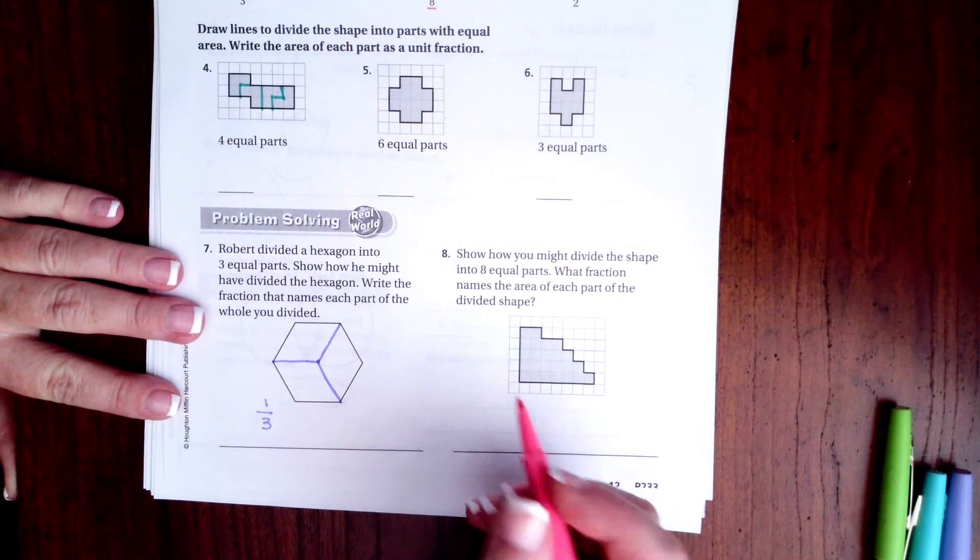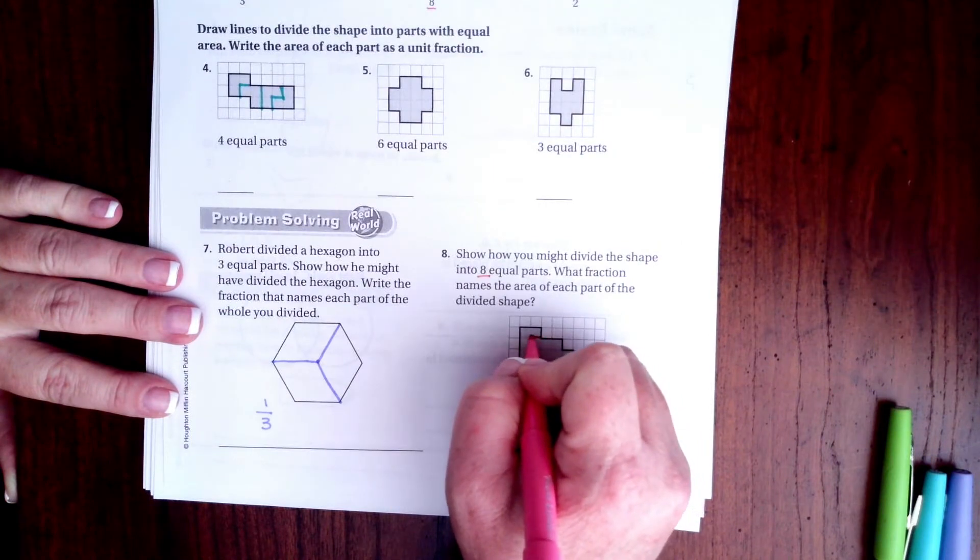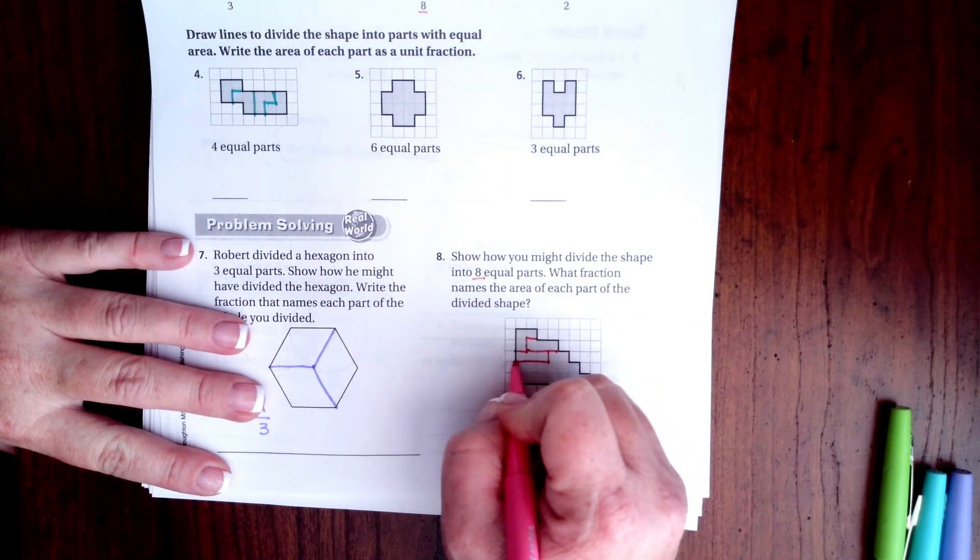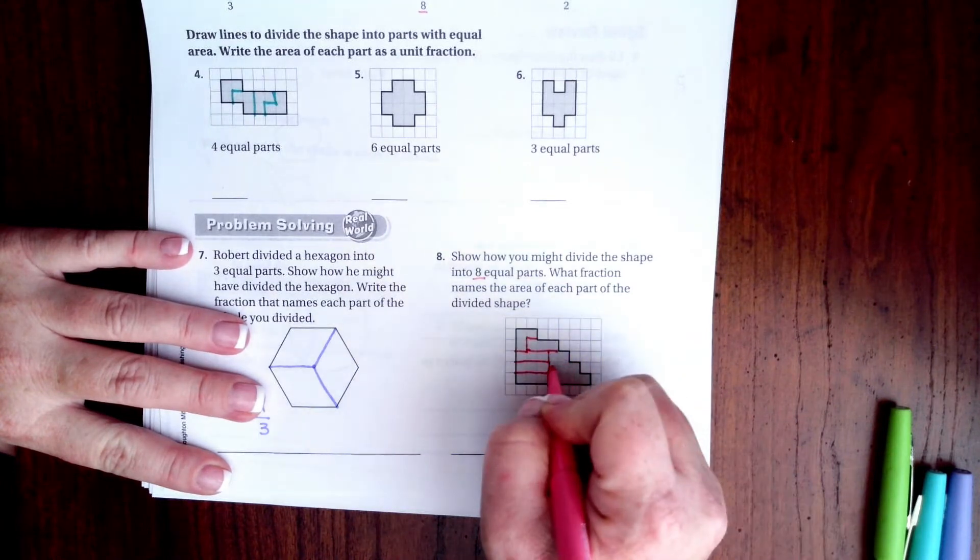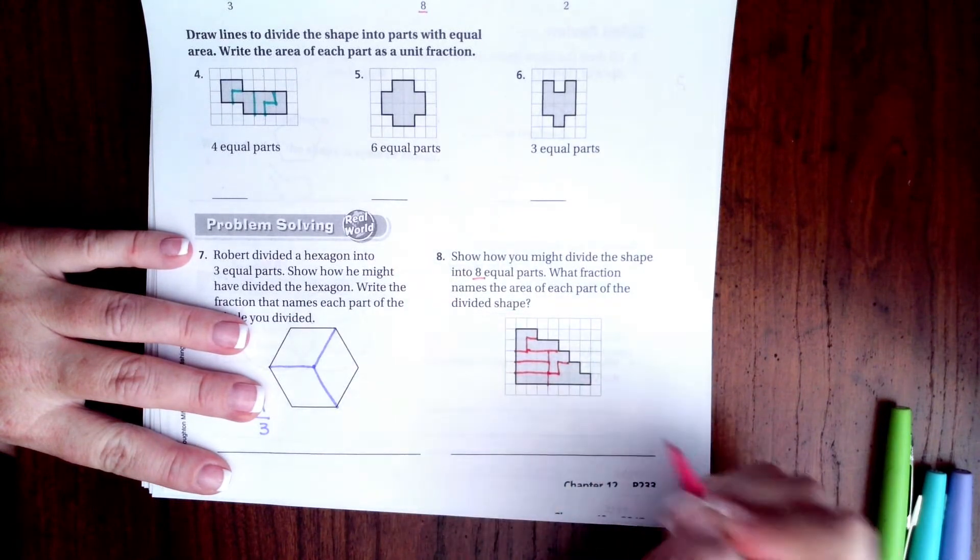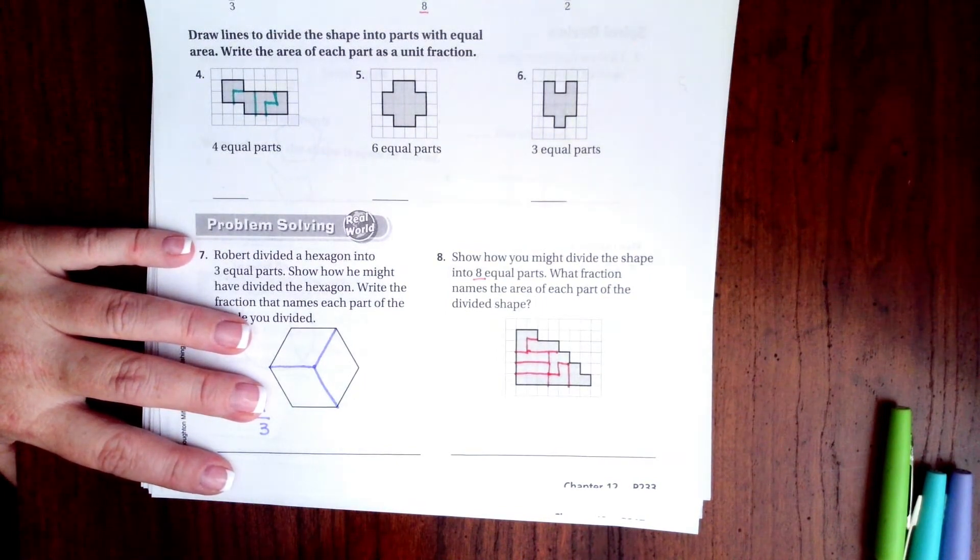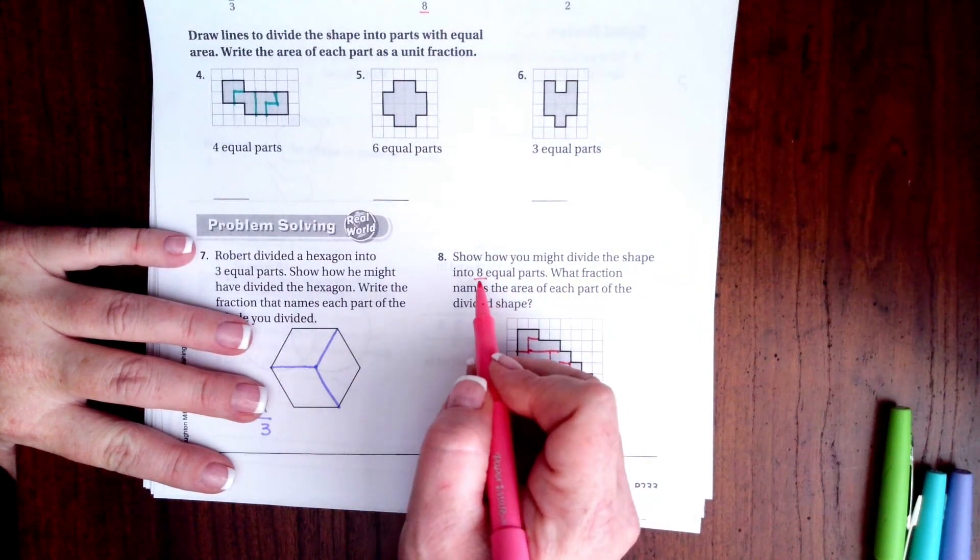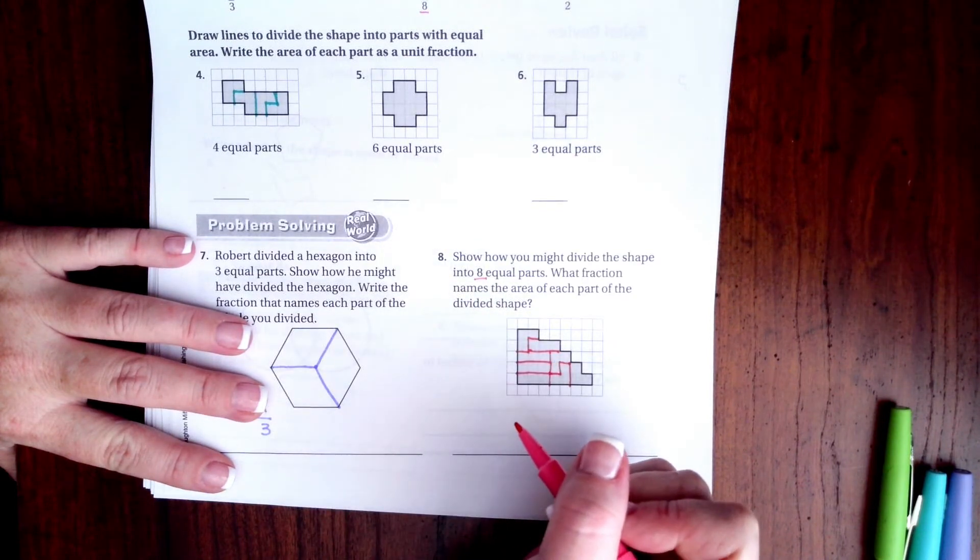24 divided by eight is three. So I'm going to break it up into three again. I'm just going to make sure that I have three, three in each one, right there and then right there. Okay, I know it's all squiggly lines, but all I did was count how many boxes I had total. I divided that by the number it gave me. That's three, 24 divided by eight.